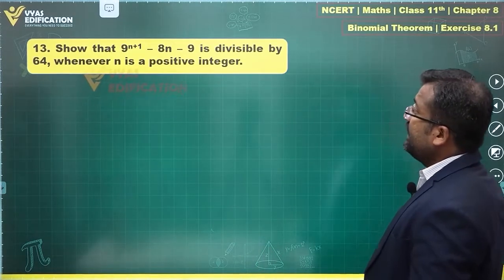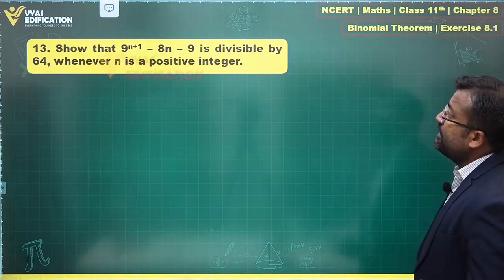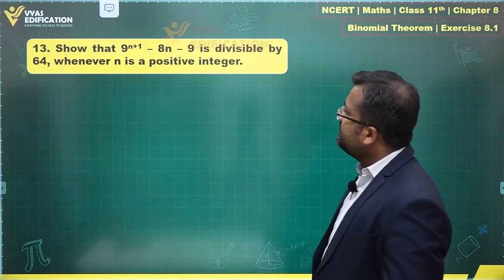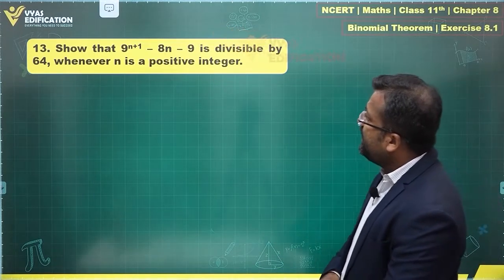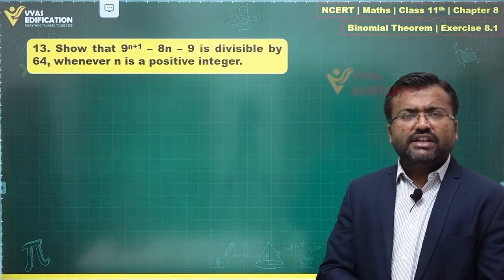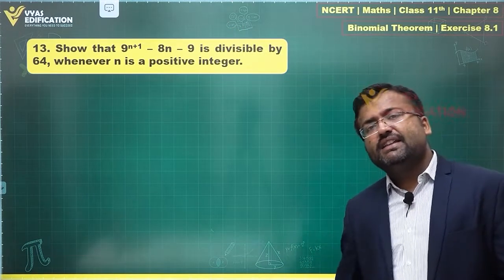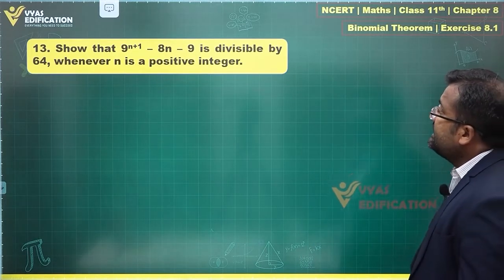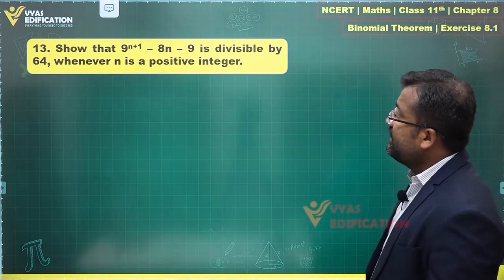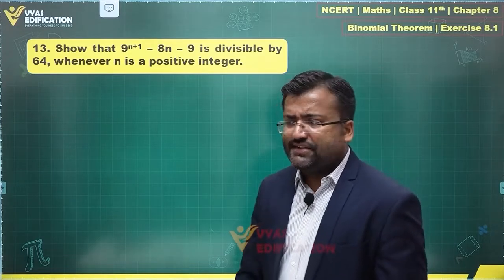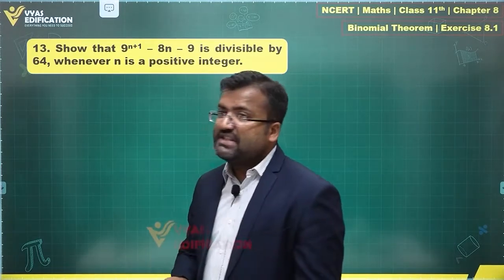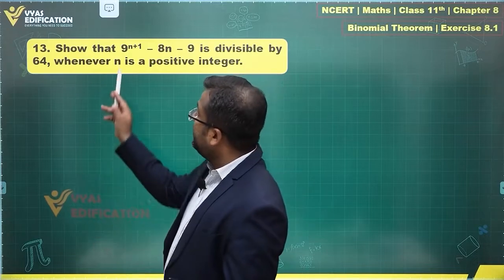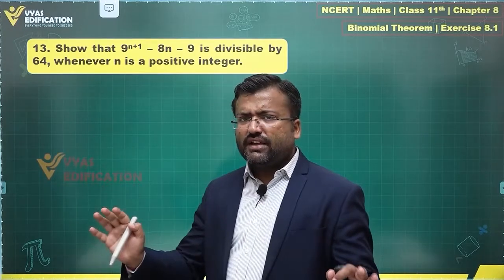Let's discuss this question: show that 9^(n+1) - 8n - 9 is divisible by 64 whenever n is a positive integer. A positive integer means n is a natural number. What's important here is that 64 is a special number related to 9^(n+1) in some way.